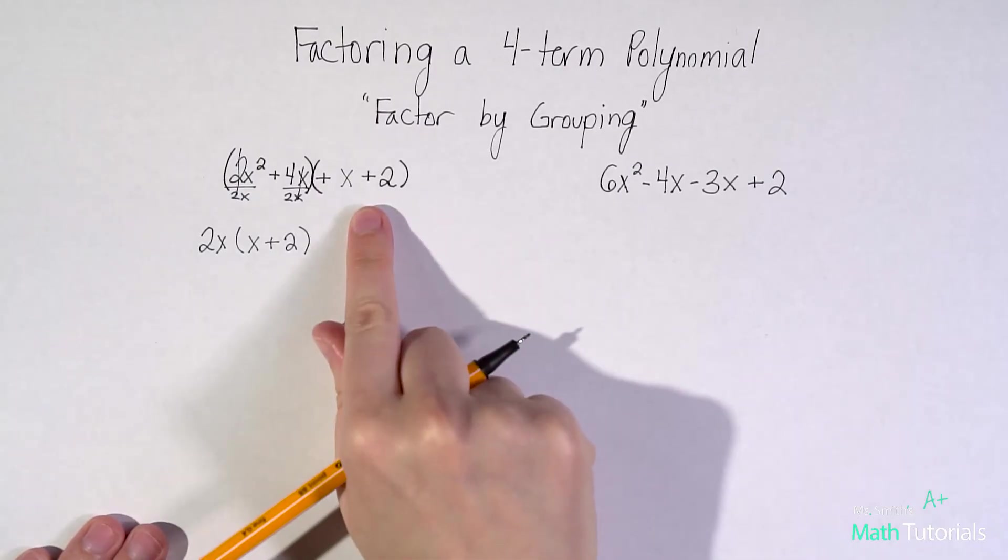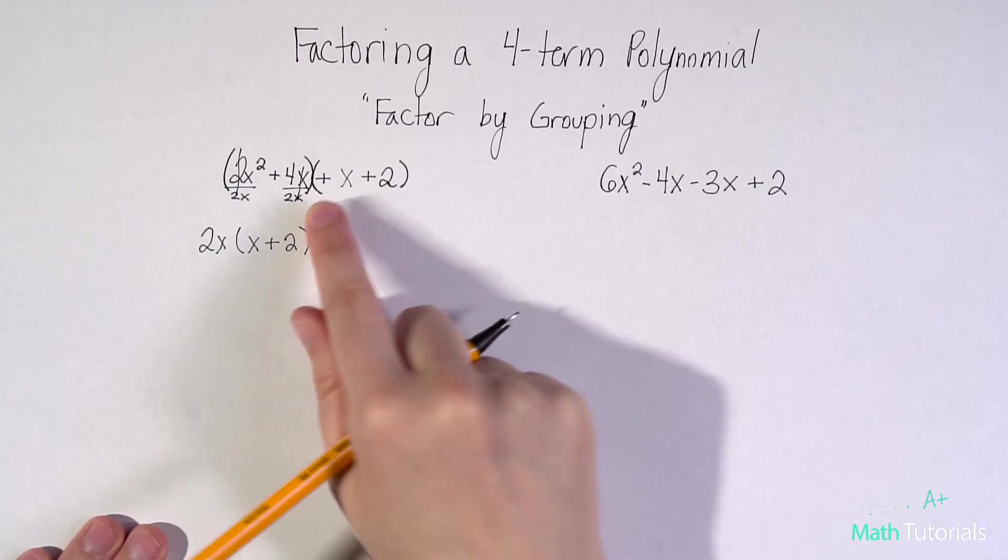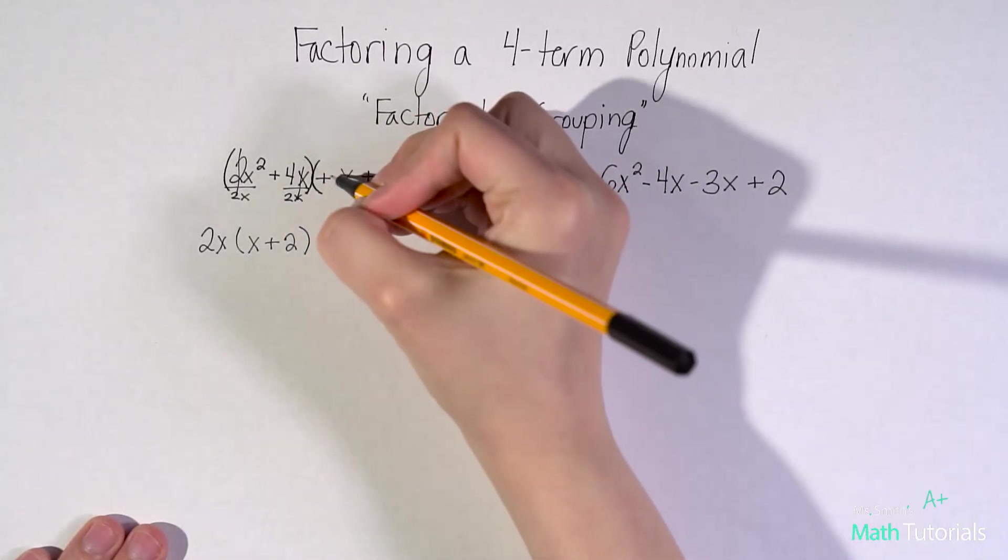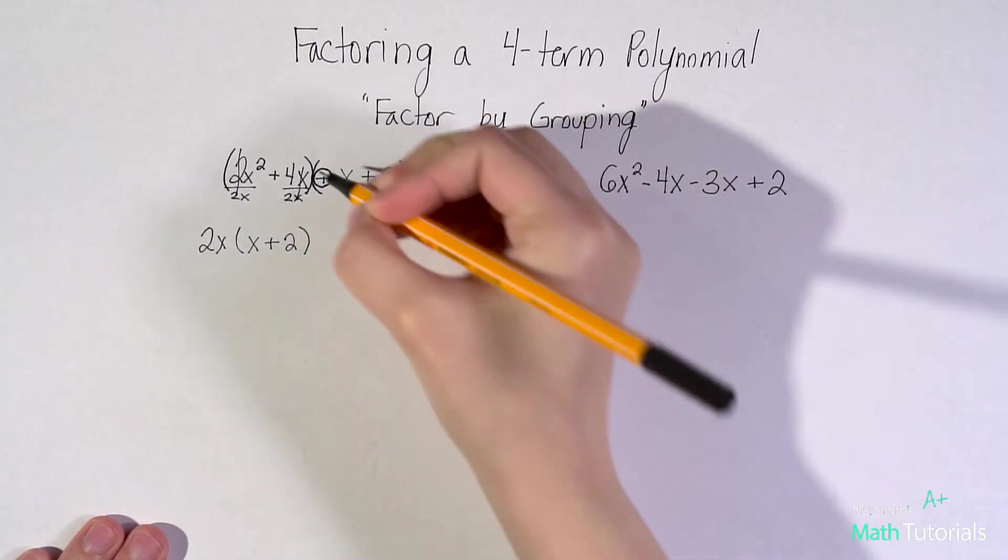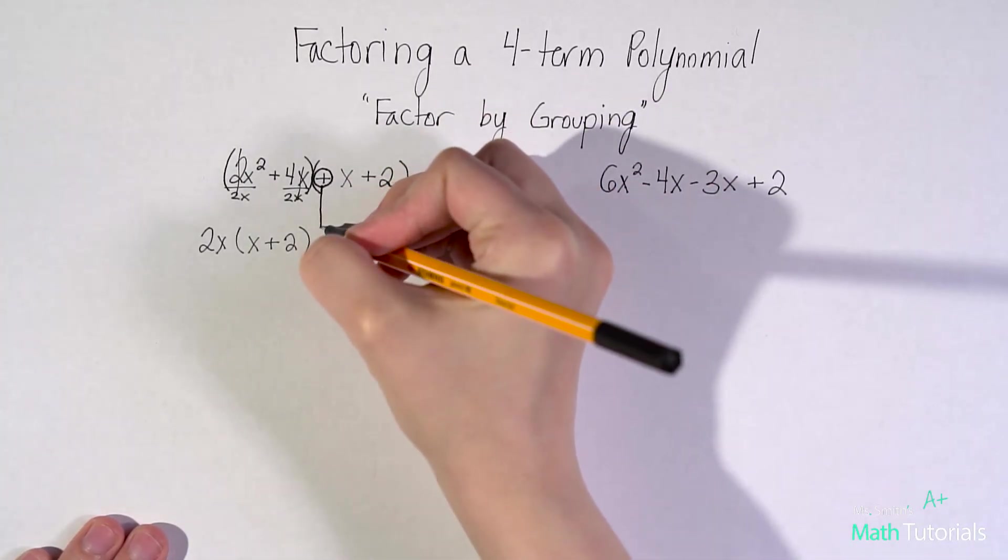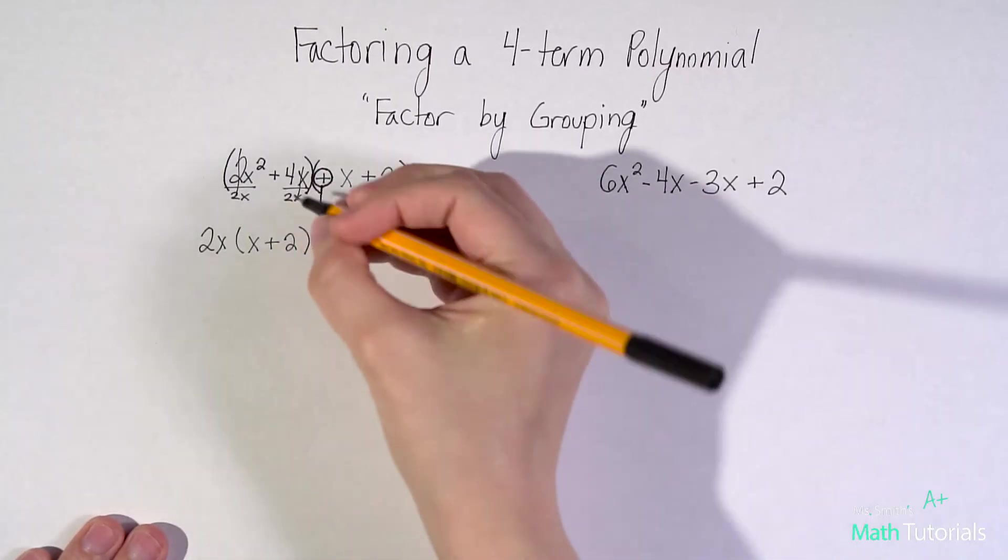Now let's look at the second grouping. This is an important step that a lot of students forget. This sign, and that's why I really emphasize to include that sign with that second parentheses. Whatever this sign is, positive or negative, it gets brought down. So it's a positive. Bring down this positive.